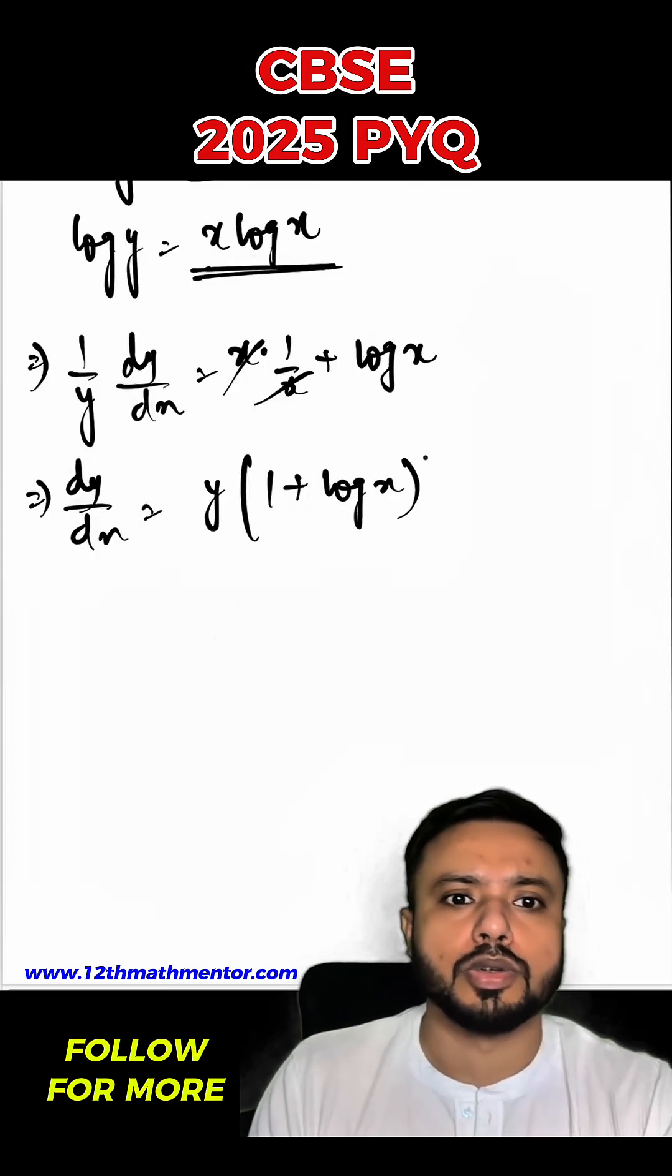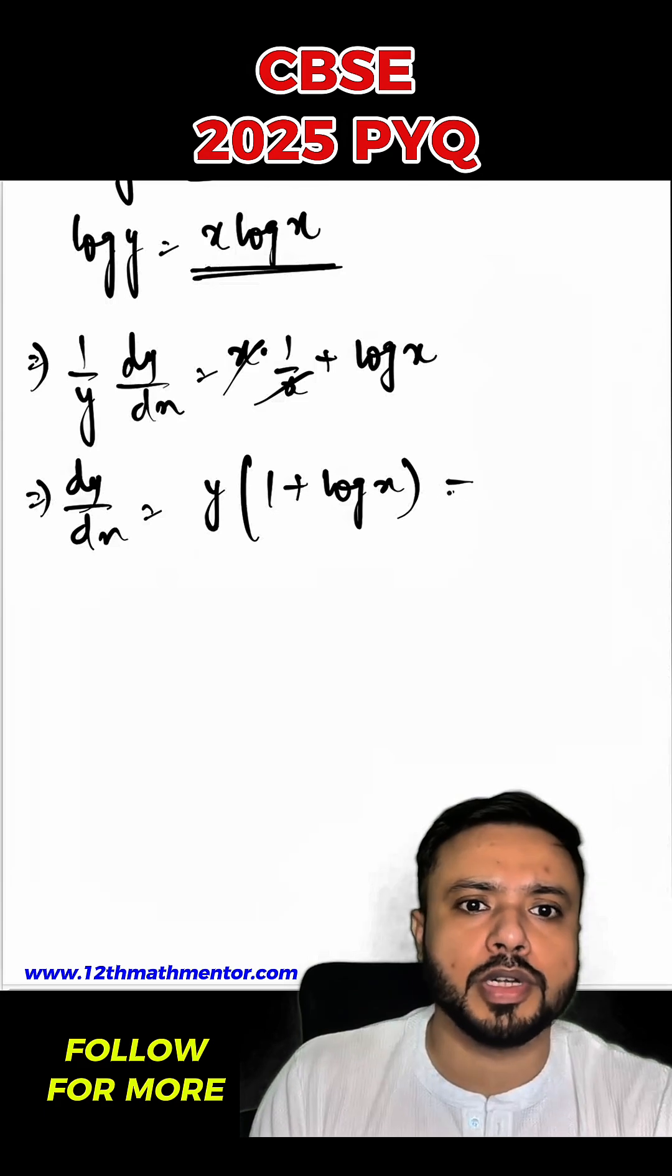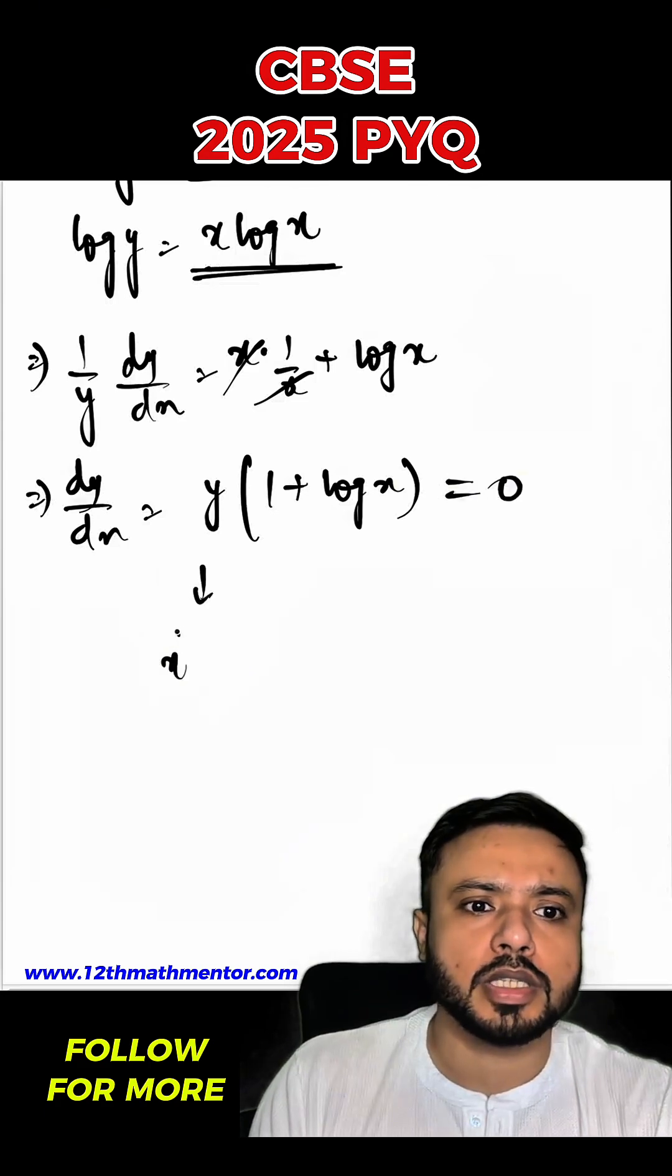So to find the critical point, we need to equate this to zero. So we can also say that x raised to the power x into 1 plus log x will be equal to zero.